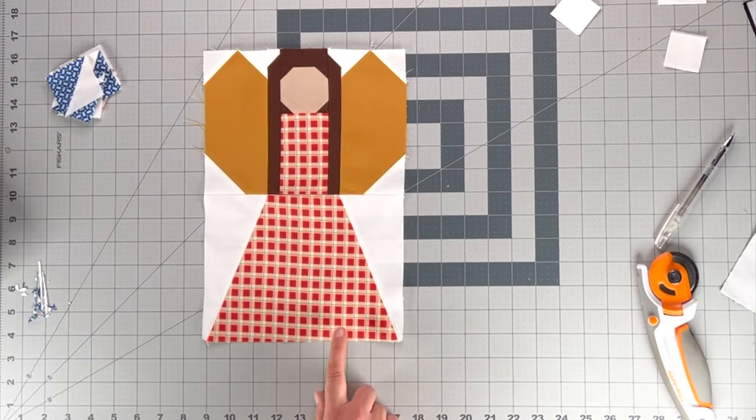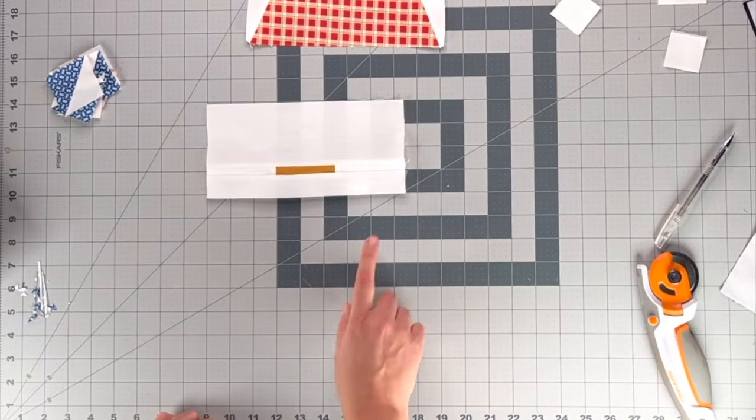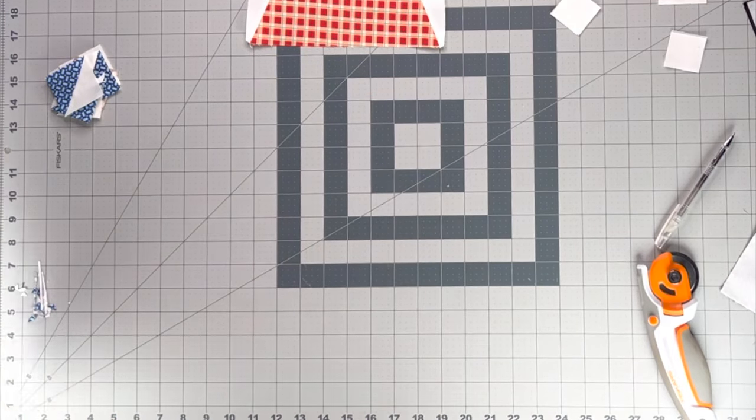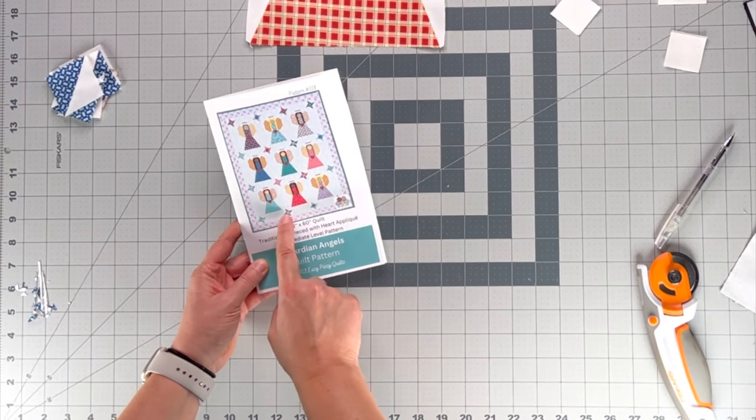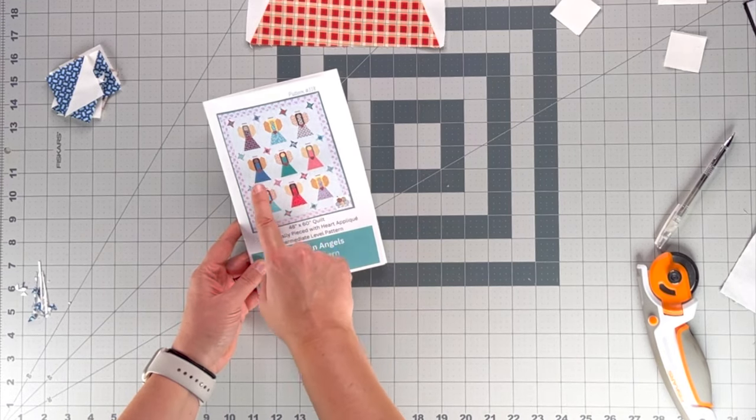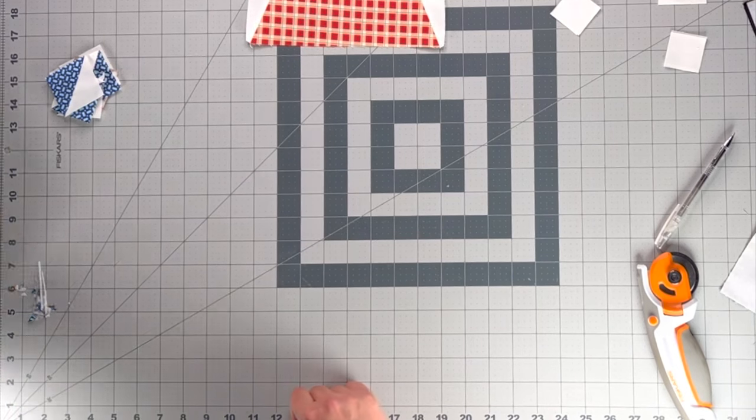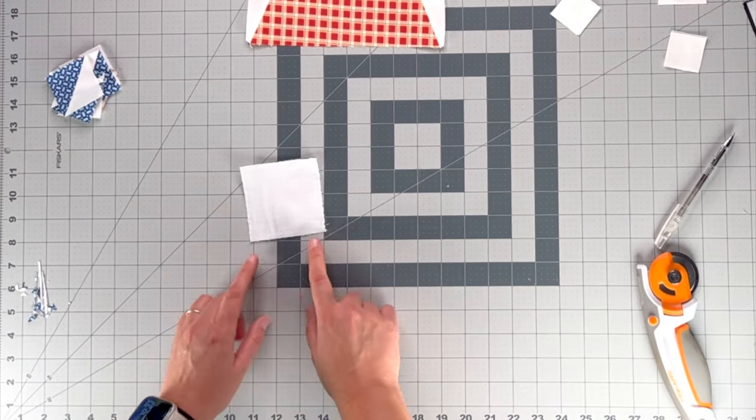Our angel block is completely assembled. Our halo block that we just talked about is put together. Now on the Guardian Angels quilt pattern, we have friendship stars in the quilt top as well. So that block is made using the four at a time half square triangle technique.